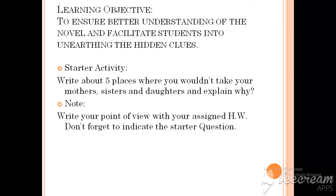Here we have a starter activity. In this activity you have to write about five places where you won't take your mothers, sisters and daughters, and you will have to give an explanation for why you will not let them go there. Write your point of view with your assigned homework and don't forget to indicate the starter question.